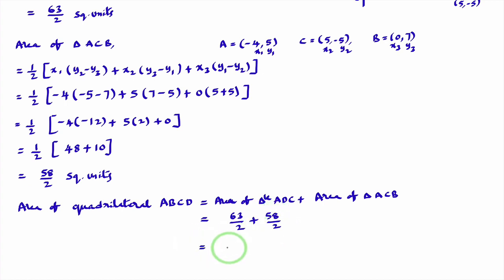So, LCM is what? LCM is 2. 63 plus 58. 63 plus 58 is 121. So, finally, Area of quadrilateral ABCD is 121 divided by 2 square units.